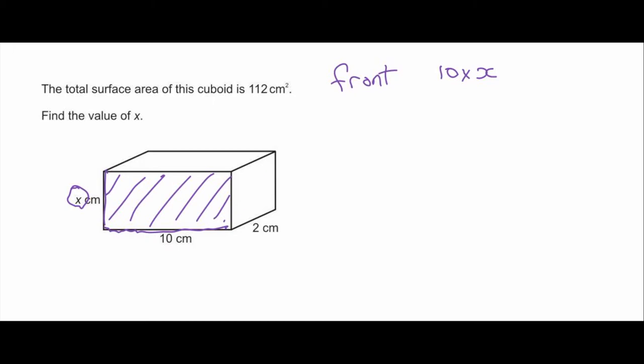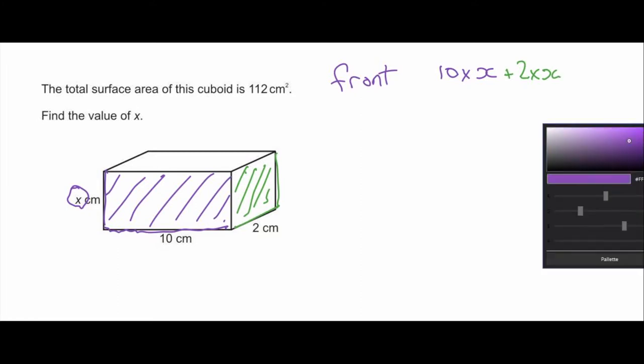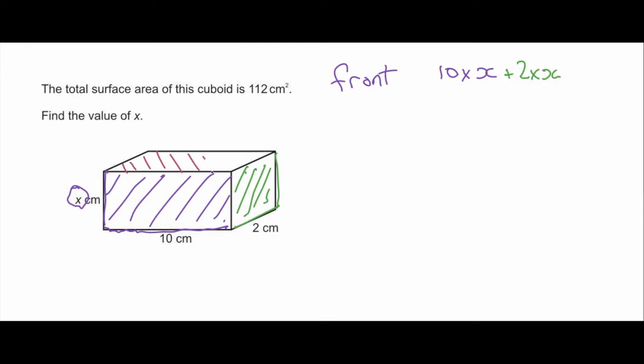Okay to find the side we've got 2 multiplied by x, so plus 2 times x. And to find the third side, this top bit here, we've got 10 multiplied by x, so plus 10 multiplied by x.